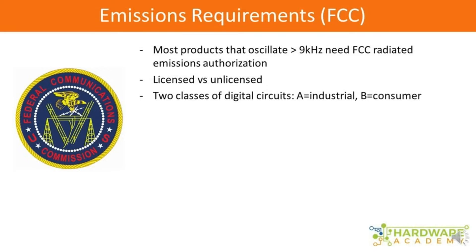There are two classes of what the FCC refers to as digital circuits. These digital circuits are non-radios — your microcontroller and all the other parts of your circuit that aren't purposely emitting electromagnetic radiation. These are classified in two different classes: Class A, which is for industrial products, and Class B for consumer products. Class B has much stricter requirements than an industrial product because individual consumers are using it and it's not going to be in a controlled environment like a factory. The allowable emissions are going to be much lower for something certified as Class B versus Class A.